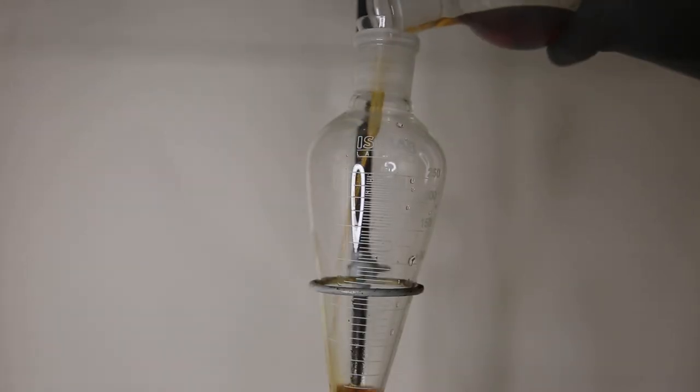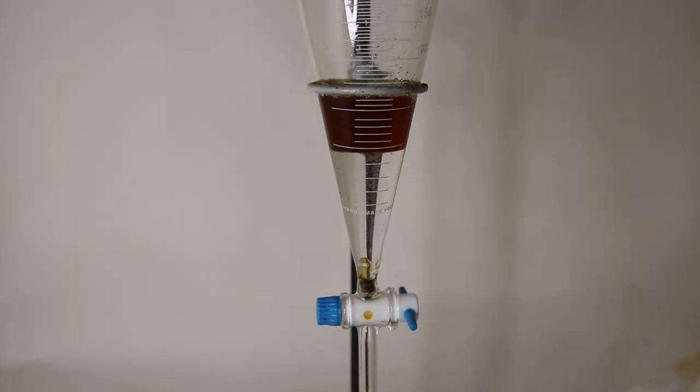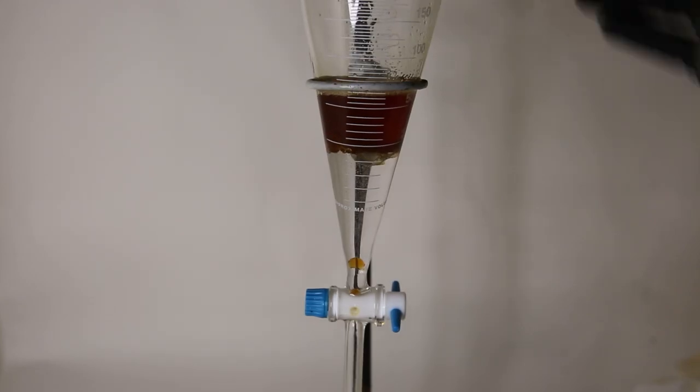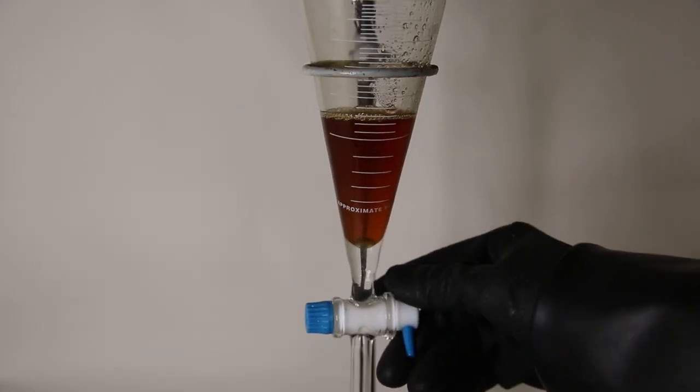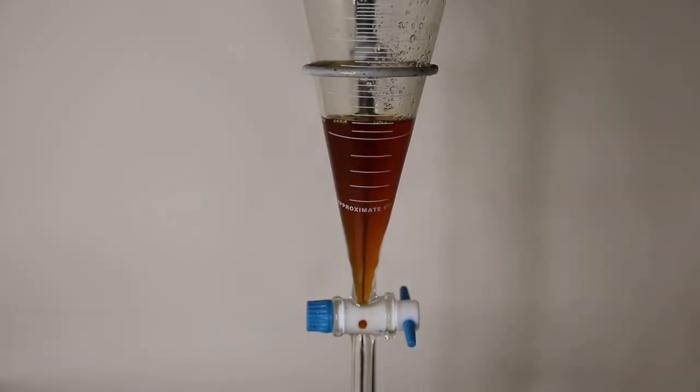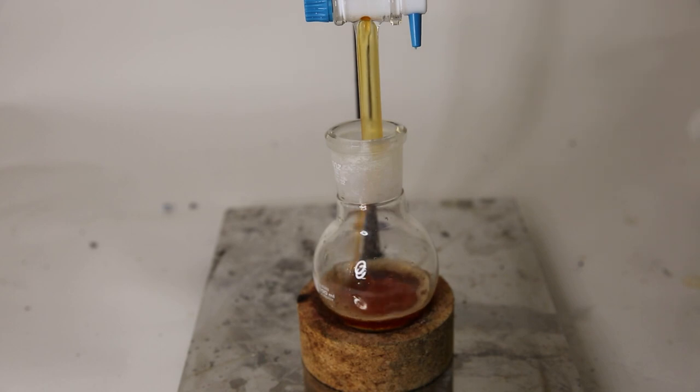So now I will just wash the benzene several times with some water. Then I drain the benzene layer into a flask containing some calcium chloride, which will absorb some of the water.